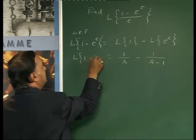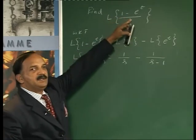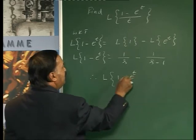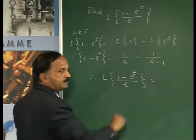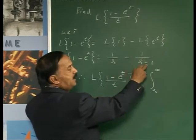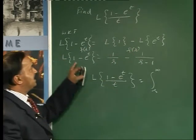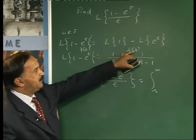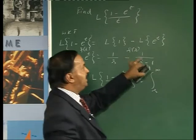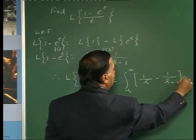So L{1 - e^t} equals 1/s minus 1/(s-1). We want L{(1 - e^t)/t}. By the division by t property: if L{f(t)} = F(s), then L{f(t)/t} = integral from s to infinity of F(s) ds. So L{(1 - e^t)/t} = integral from s to infinity of [1/s - 1/(s-1)] ds.